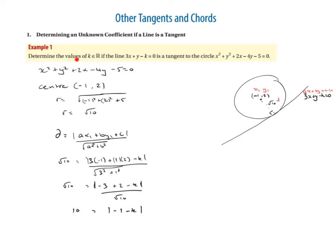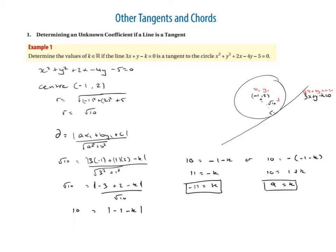For a modulus equation, we set the positive equal to 10 and the negative equal to 10, giving us two answers. So either -1 - k = 10, which gives k = -11, or -(-1 - k) = 10, which gives 1 + k = 10, so k = 9. The two answers are k = 9 or k = -11.